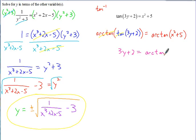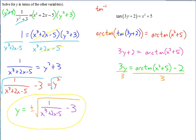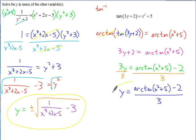So 3y plus 2 equals the arctan of x squared plus 5. Now that y is not inside the trig function, it's easy to isolate. Subtract 2 — but note this is outside the arctan so you can't combine it with the 5 inside. Then divide by 3. So y equals arctan of x squared plus 5, minus 2, all divided by 3. That's how you manipulate equations to get them in a form that's more helpful when solving for y.